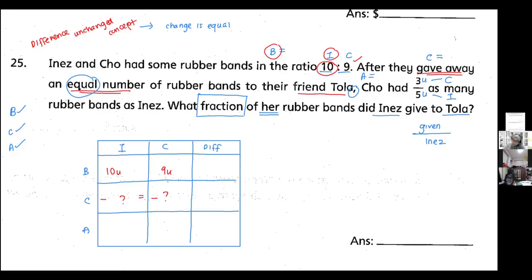Then after. After Cho will be 3 units. After Inez is 5 units. Difference means you need to minus—what do I look at? The before and after. So the difference for before will be 10 units minus 9 units equals 1 unit. For the after, 5 units minus 3 units equals 2 units.